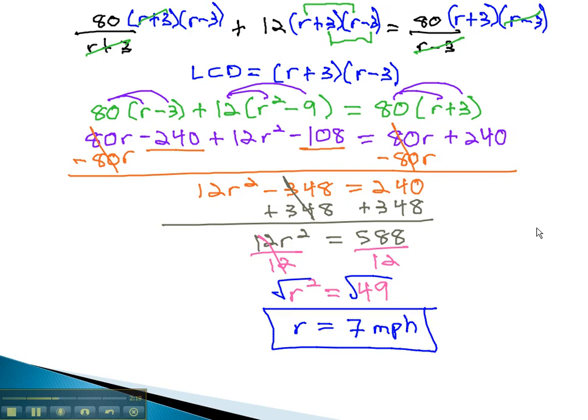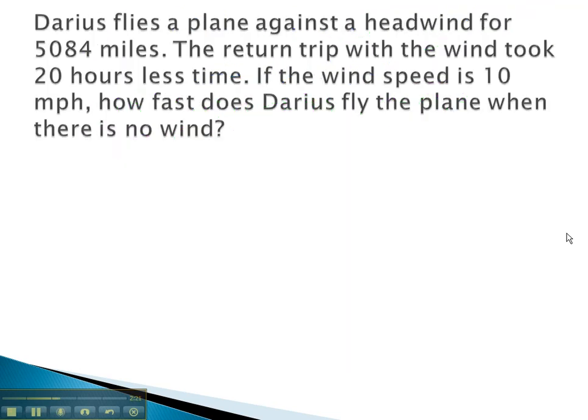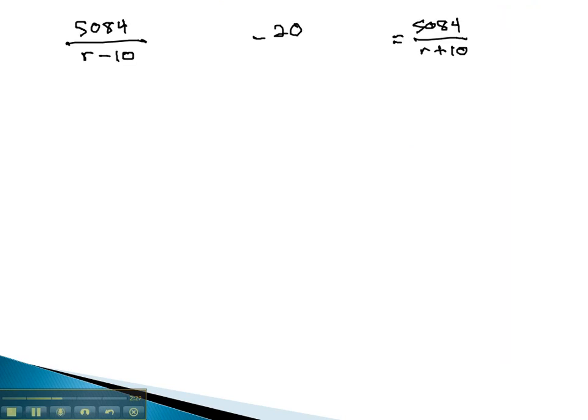The second example we looked at was an airplane flying into the wind and out of the wind. We found out this could be modeled with the following equation. We can start solving by identifying the least common denominator to be r minus 10 times r plus 10.